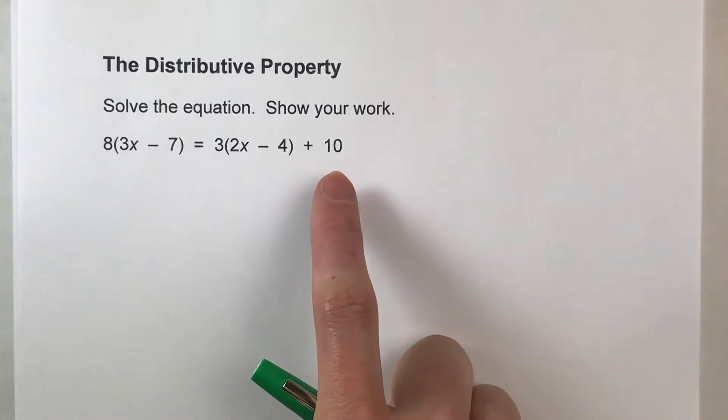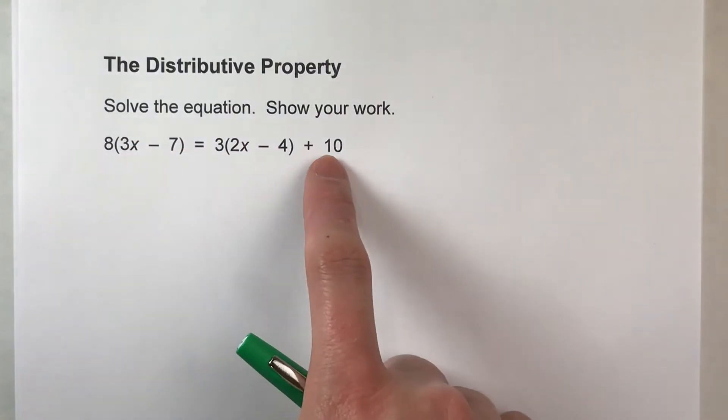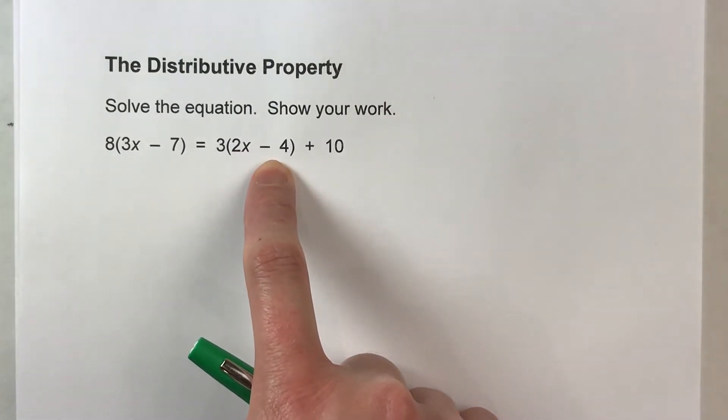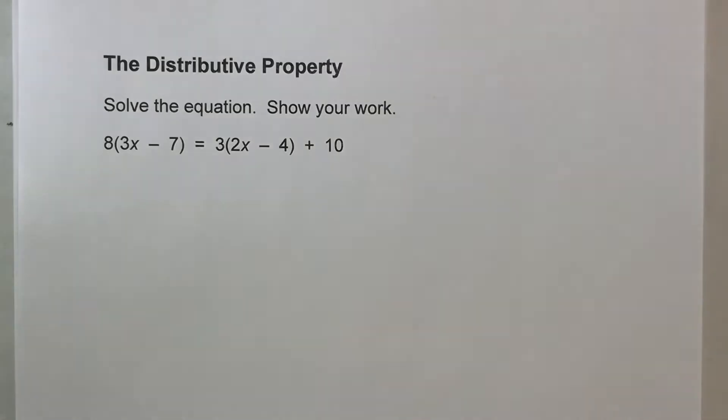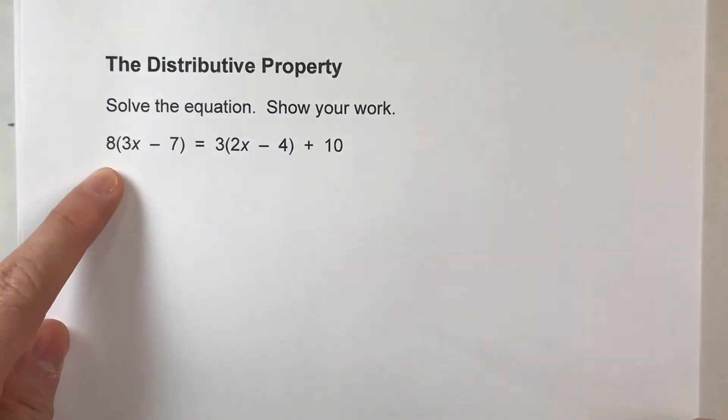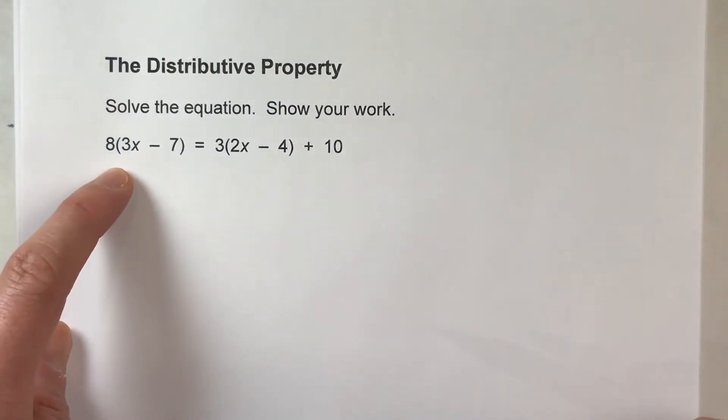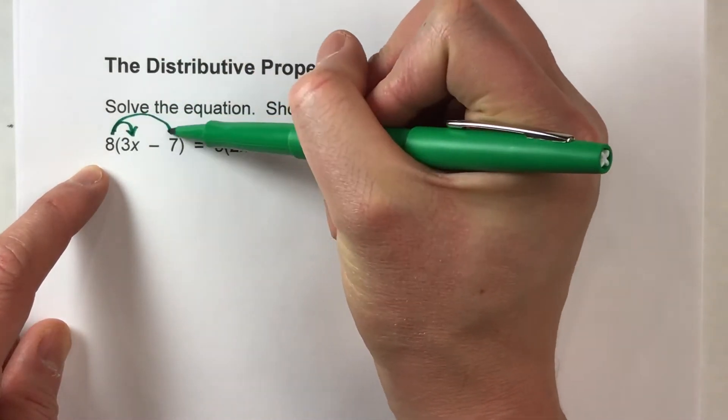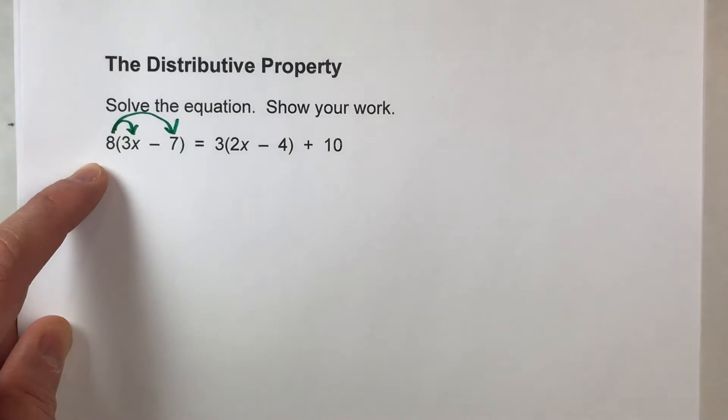So in order to solve this problem, we are going to have to simplify this so that there aren't parentheses in here anymore. And for that, we are going to use the distributive property. The distributive property says that if you're multiplying 8 by a bunch of things in parentheses, you have to multiply that 8 times each individual thing in the parentheses.